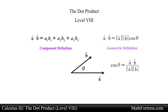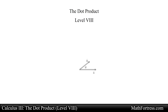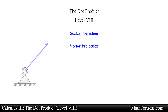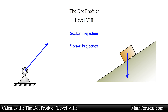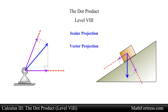Another useful application of the dot product is to find the scalar and vector projections between two vectors. Many applications in physics and engineering make use of vectors by adding two or more vectors to produce a resulting vector. At times the reverse problem — decomposing a given vector into the sum of two or more vector components — is often encountered.